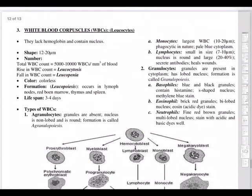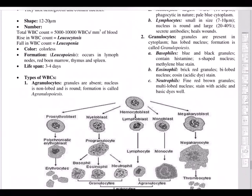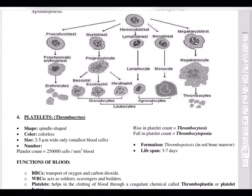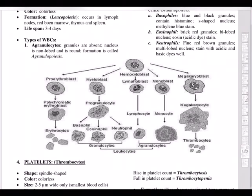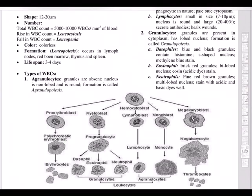WBCs are our soldiers, protecting the body. They are classified into agranulocytes — where granules are absent — including monocytes (the largest WBC) and lymphocytes (present in lymph); and granulocytes — including basophils with blue-black granules, eosinophils with brick-red granules, and neutrophils. Normal WBC count is 5,000 to 10,000 per mm³. A rise or fall in WBC count both indicate problems. The lifespan of WBCs is three to four days.